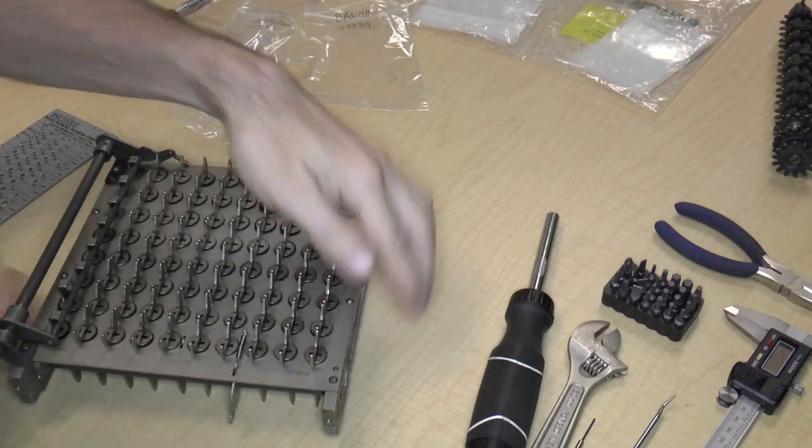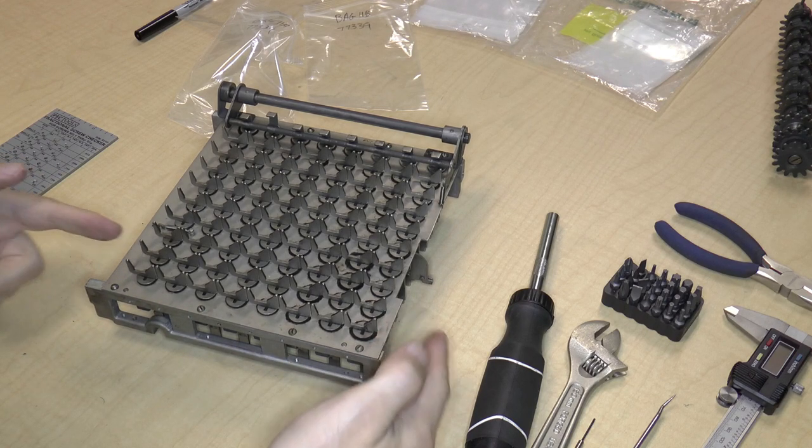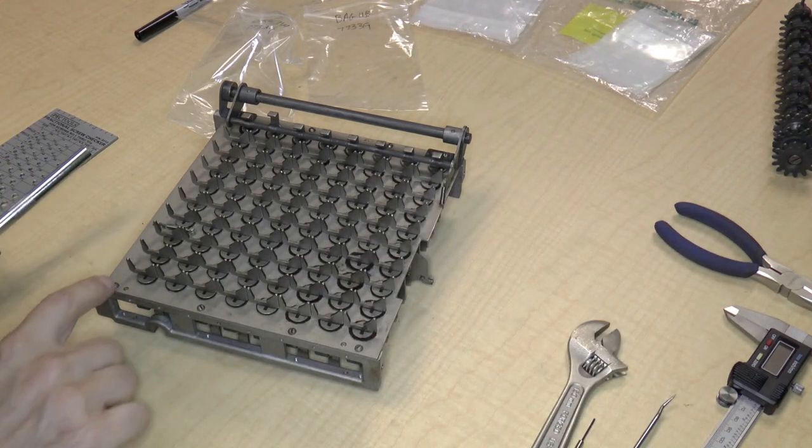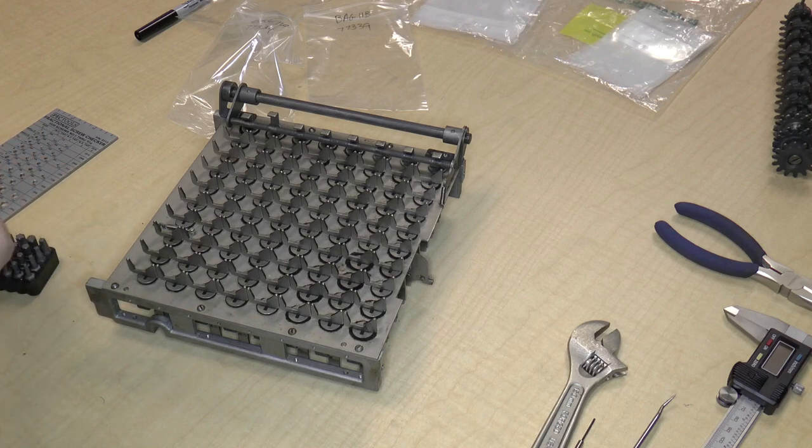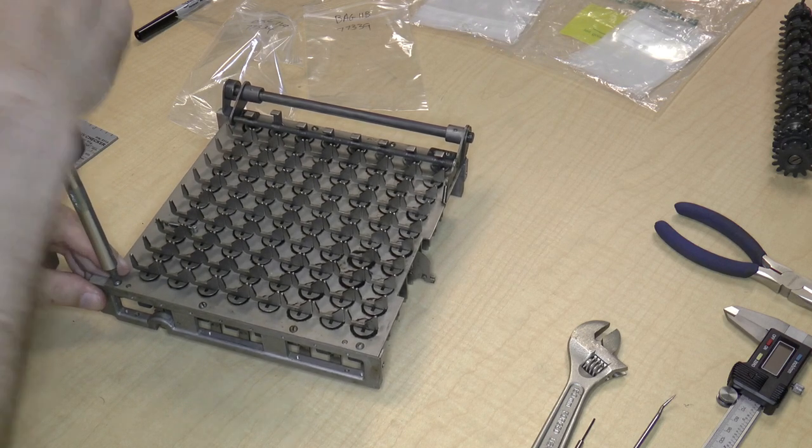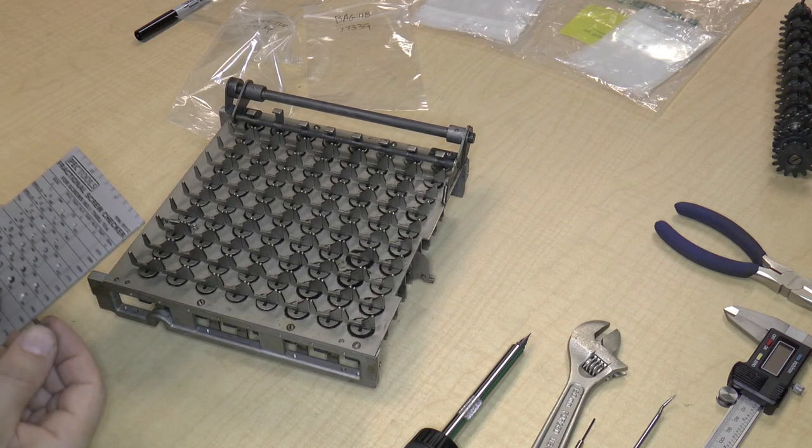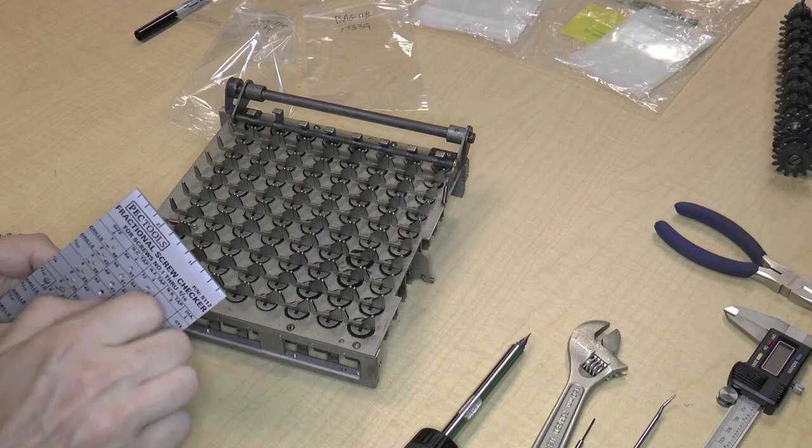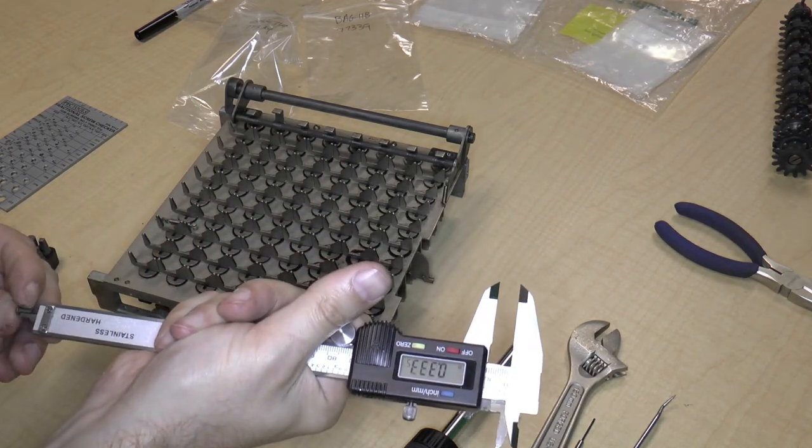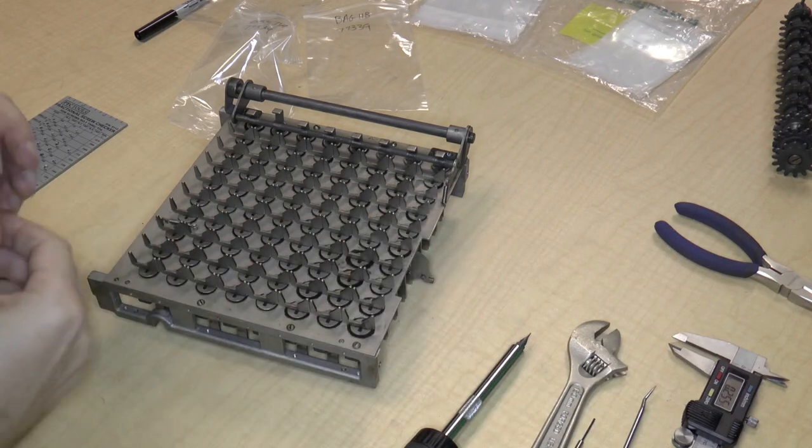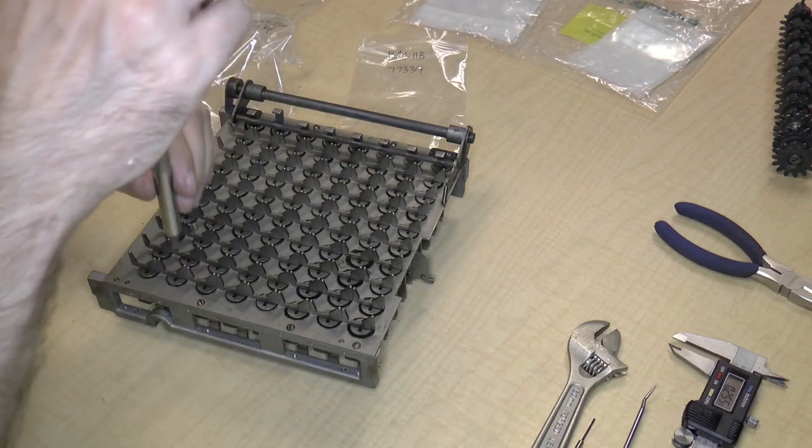Let's turn this over. We can see that there are four screws holding the base plate onto the frame. So we'll remove those. These are also round heads. This is a 4-48 screw and it measures out to 0.255. This is a small part, it'll go in 11b.